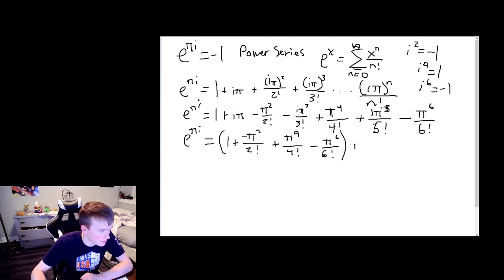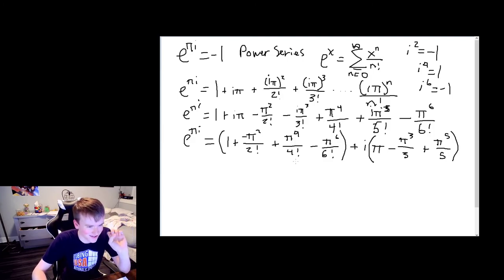Hopefully that should look like a familiar power series. And then we're adding to that. If we look at all the even terms, there's an i in all these. So we can pull that i out, and then we're left with π minus π³/3! plus π⁵/5!. Here's sort of the trick, the realization: the first term, this is a power series for cosine, right?